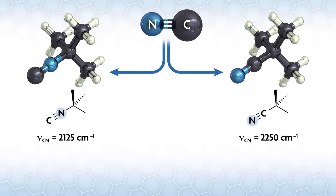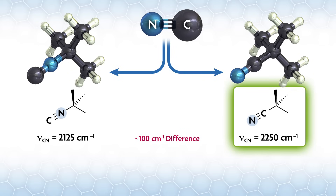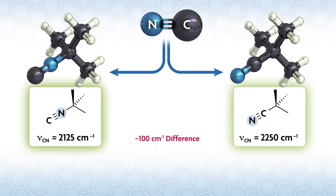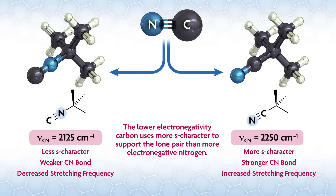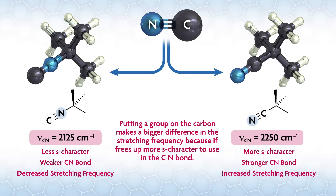For CN-tert-butyl versus NC-tert-butyl, there's about a 100 reciprocal centimeter difference. The derivative with the tert-butyl group on the carbon has a higher stretching frequency than the one with the tert-butyl group on nitrogen. The lower electronegativity carbon uses more S character to support the lone pair than the more electronegative nitrogen — this is due to what's called Bent's rule. As a result, putting a group on the carbon makes a bigger difference in the stretching frequency because it frees up more S character to use in the CN bond.